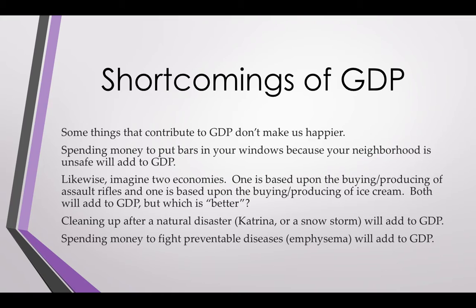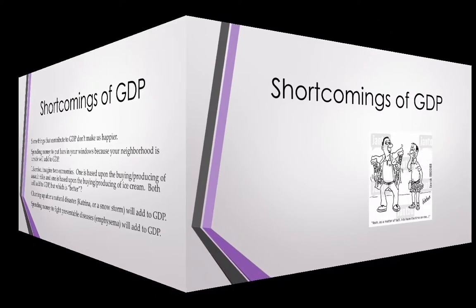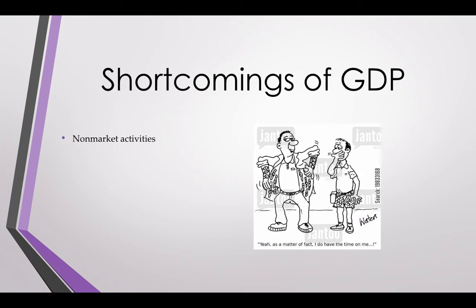Similarly, spending money to fight preventable diseases like emphysema, obesity, and cigarette smoking contributes to GDP, but everyone would agree it would be better if we didn't have to. Other shortcomings: non-market activities don't count — if someone walks your dog as a favor and you're not paying them, it doesn't count. Cutting a friend's hair, mowing your parent's lawn, leisure activities like going to the beach — these are things we enjoy but don't count as part of GDP.